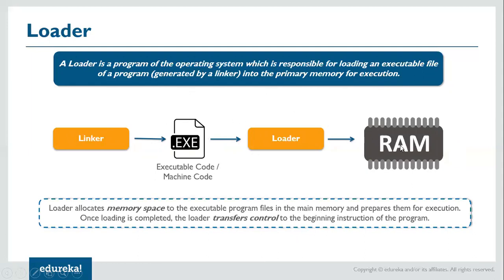Now loader locates memory space for the executable program file in the main memory and prepares them for execution. Once loading is completed, the loader transfers control to the beginning of the instruction. So this is where you load the program in the memory so that you can actually execute your program.